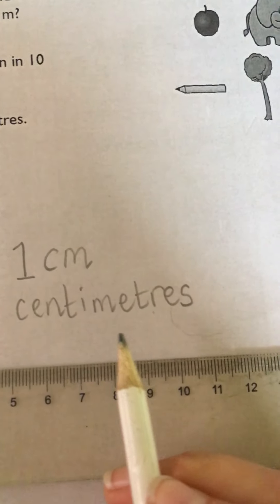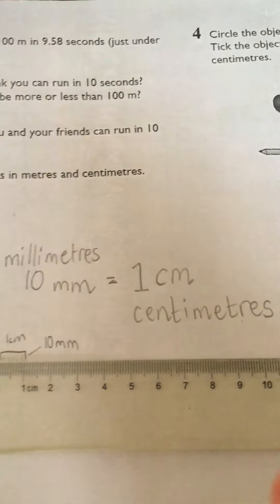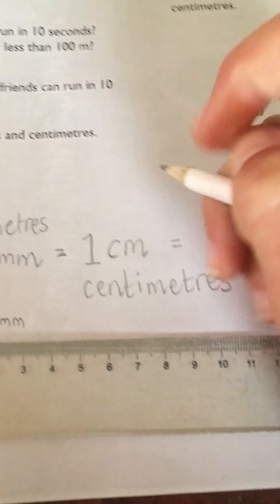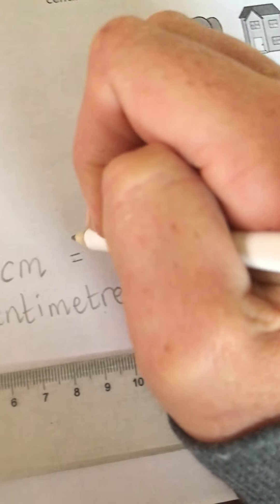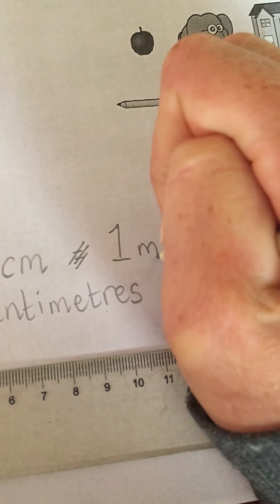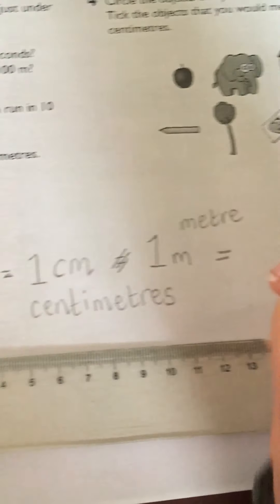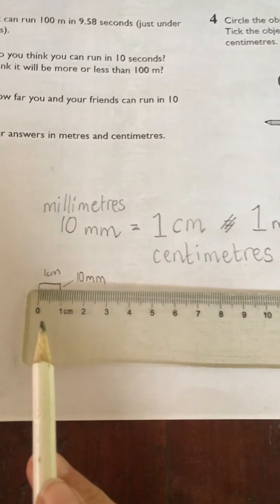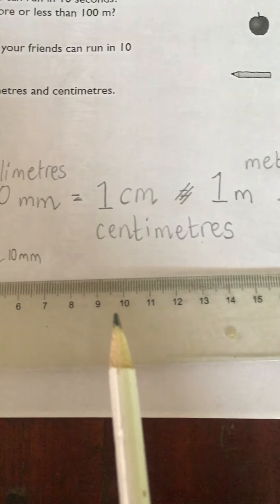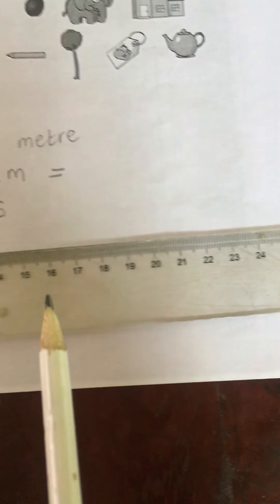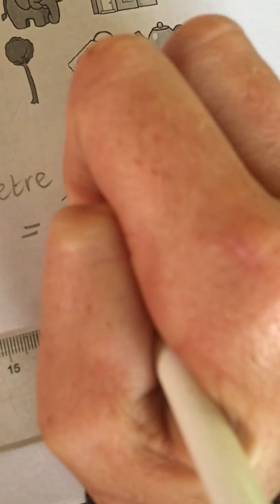We spell millimeters M-I-L-L-I-milli and then the same meters. Today we look at something even bigger than that, and that is a meter. So we write one meter. One meter is the same as 100 centimeters. You can see this ruler here is 10 centimeters, 15 centimeters, 20 centimeters, 30 centimeters. So one meter is the same as 100 of those centimeters.